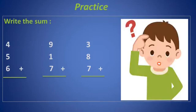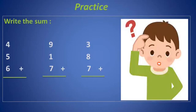Now you have three problems to solve. The first one is 4 plus 5 plus 6. The second one is 9 plus 1 plus 7. The last one is 3 plus 8 plus 7. Remember to choose two numbers to add first — you can add them in different ways. Circle the addends you add first. Start with the greater number, then count on to find the sum. Think about it. Good luck! Bye-bye.